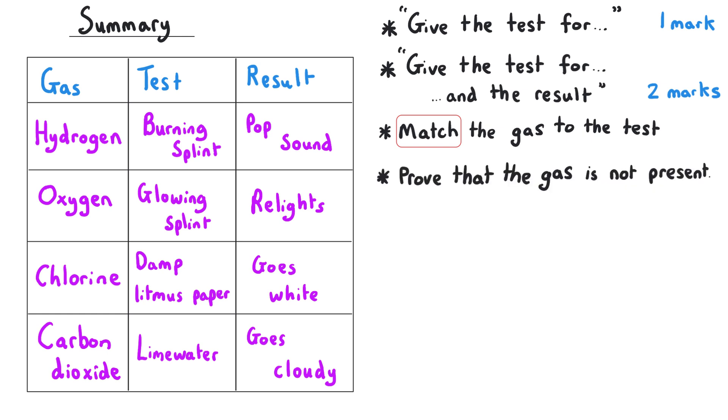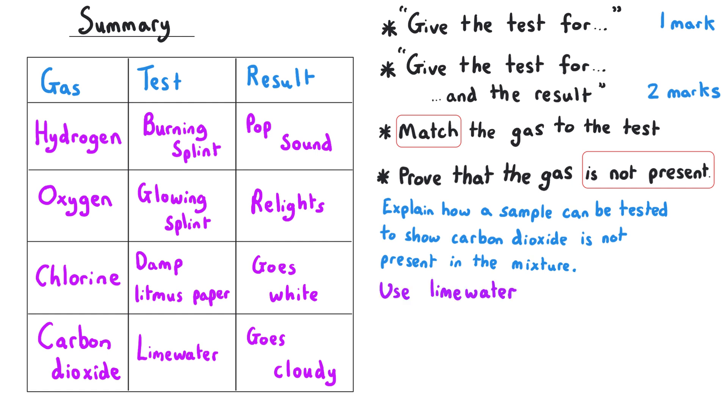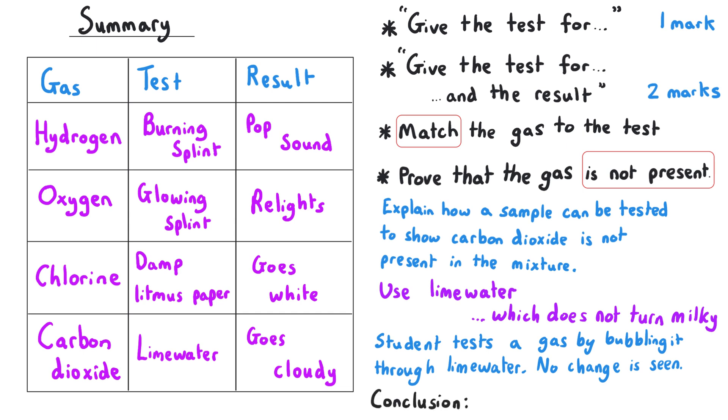Alternatively, you might be asked to prove that a gas is not present. So a question might say explain how a sample could be tested to show that carbon dioxide is not present in the mixture, and you would have to say that you would use lime water or bubble the gas through lime water and that this lime water would not turn milky. Or they might tell you that a student is testing the gas produced in a reaction by bubbling it through lime water, and they then say that no change is seen in the lime water. You could be asked to give a conclusion that the student could make about the gas being produced. In this situation, we would simply say that the gas is not carbon dioxide or that no carbon dioxide gas is present.